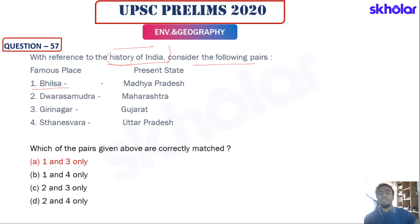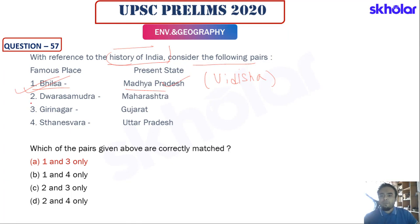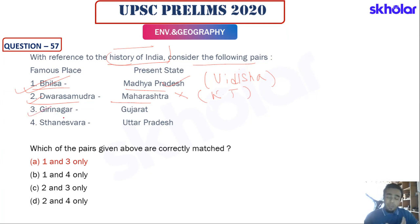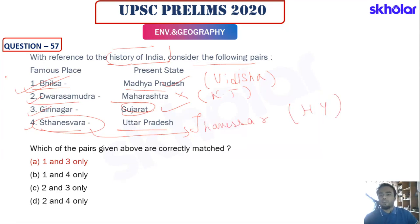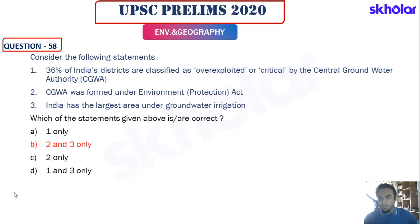The history question asks about pairs of ancient and modern place names. Bilsa in Madhya Pradesh — correct, currently known as Vidisha. Dwara Samudra in Maharashtra — incorrect, it's in Karnataka (modern Halebidu). Girinagar in Gujarat — correct, currently known as Girnar, famous for lions. Thaneshwara in Uttar Pradesh — incorrect, it's in Haryana (modern Thanesar). Combinations two and four are wrong; only one and three are correct. Answer: option A.